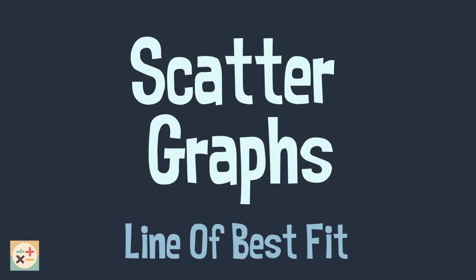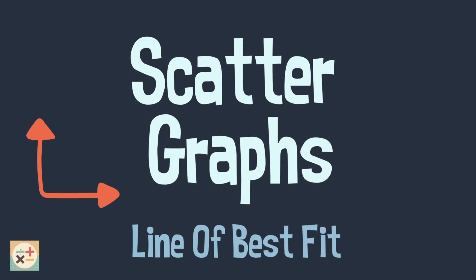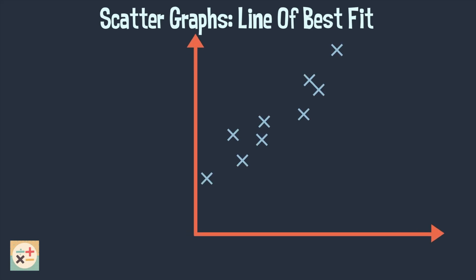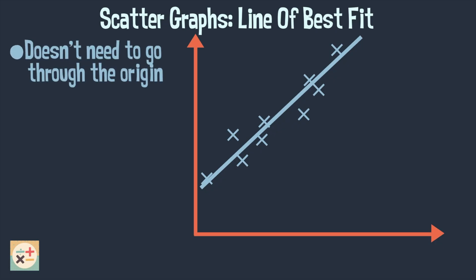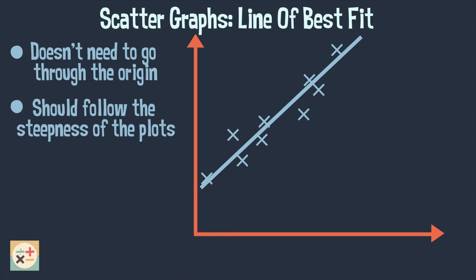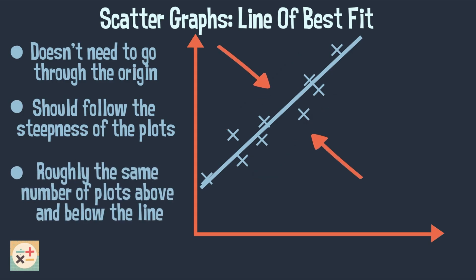Finally, we are going to look at how we can draw a line of best fit on a scatter graph. A line of best fit is a straight line which extends approximately through the middle of the scatter plots. There are a few things to note when drawing a line of best fit: firstly, it doesn't have to go through the origin; it should follow the steepness of the plots; and there should be roughly the same number of plots above the line as there are below.